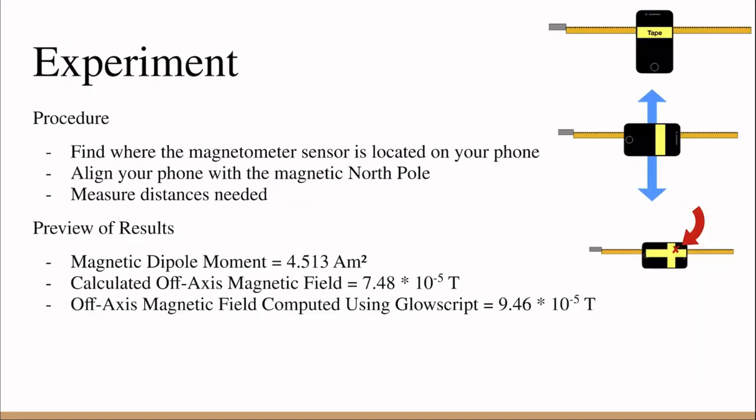The procedure of this experiment was to first find where the magnetometer sensor is located on your phone, and you could do that by following the steps shown on the pictures at the top right.